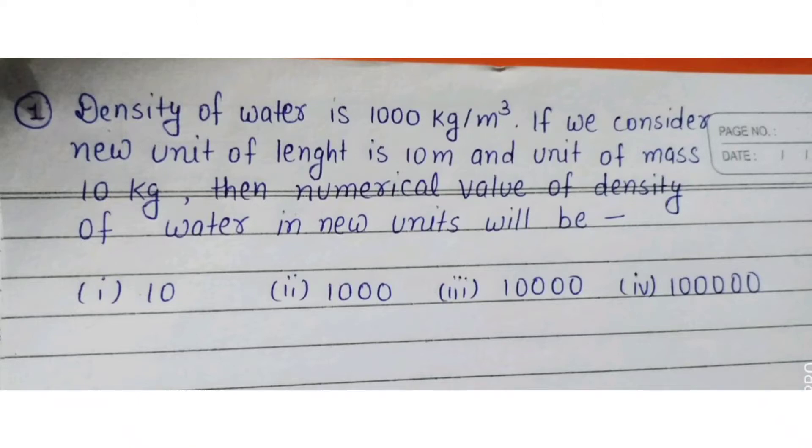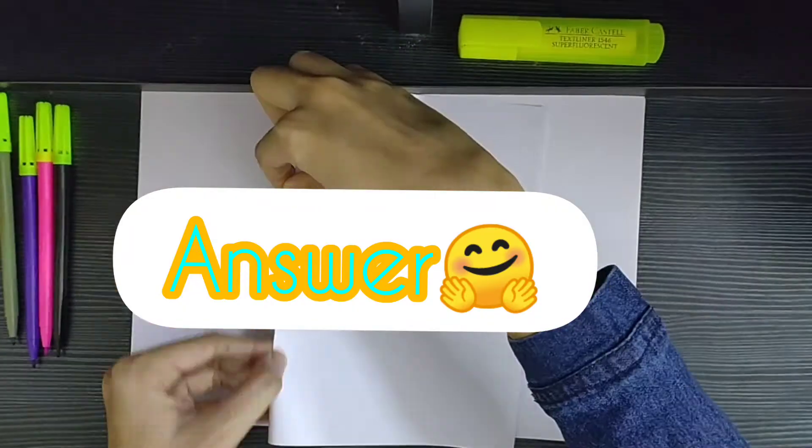Hey guys, let's try to do this particular problem today. The question says that the density of water is 1000 kg/m³. If we consider a new unit of length is 10 meters and unit of mass is 10 kilograms, the numerical value of density of water in the new unit system will be?